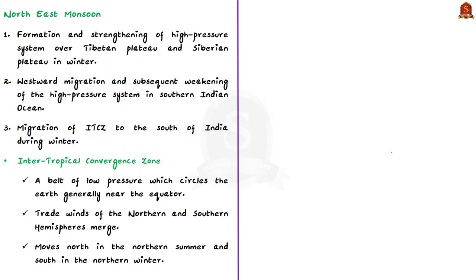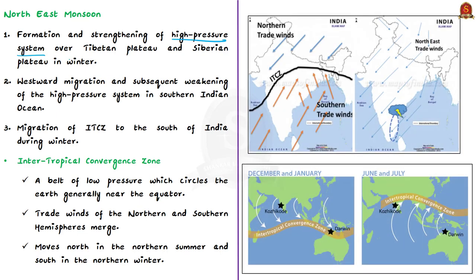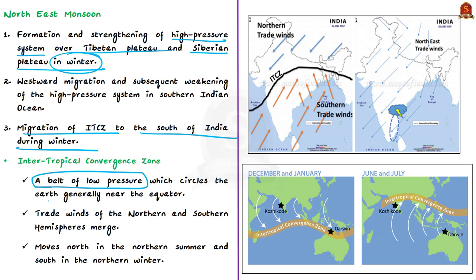The factors responsible for the formation of the northeast monsoon are: first, the formation and strengthening of a high pressure system over the Tibetan plateau and Siberian plateau in winter; second, the westward migration and subsequent weakening of the high pressure system in the southern Indian Ocean; and third, the migration of the intertropical convergence zone to the south of India during winter. The ITCZ is a belt of low pressure encircling the earth near the equator, where trade winds of northern and southern hemispheres merge, and it follows the sun seasonally.